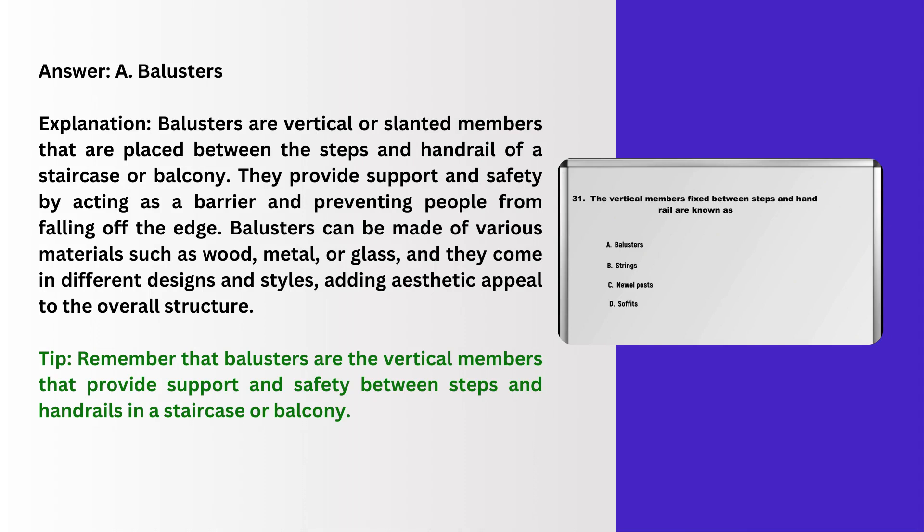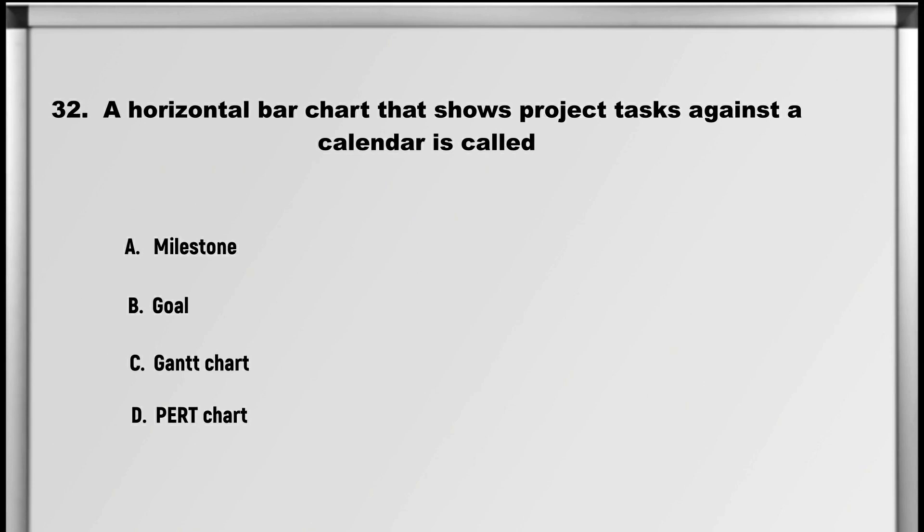Explanation: Balusters are vertical or slanted members that are placed between the steps and handrail of a staircase or balcony. They provide support and safety by acting as a barrier and preventing people from falling off the edge. Balusters can be made of various materials such as wood, metal, or glass, and they come in different designs and styles, adding aesthetic appeal to the overall structure. Tip: balusters are the vertical members that provide support and safety between steps and handrails in a staircase or balcony.